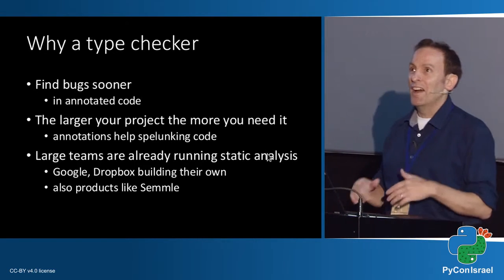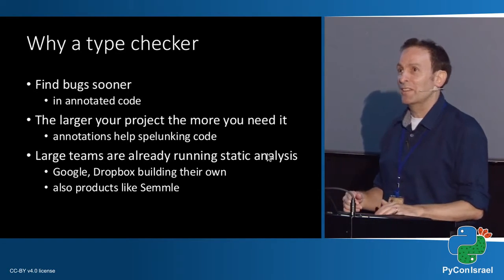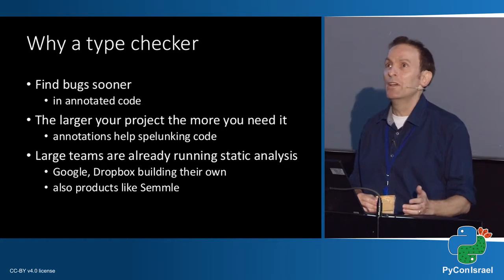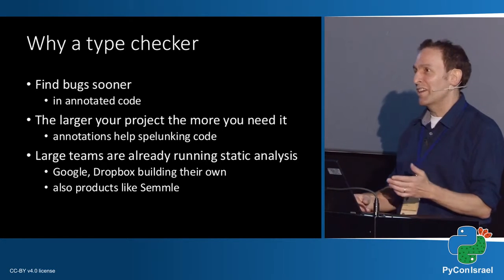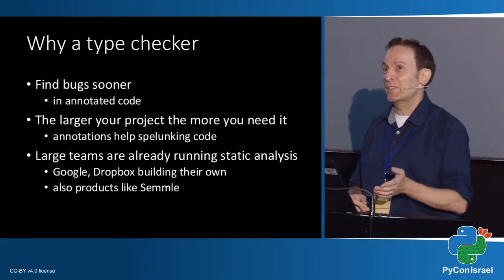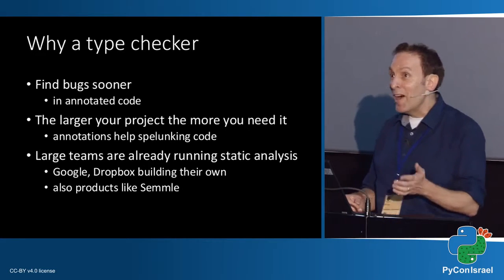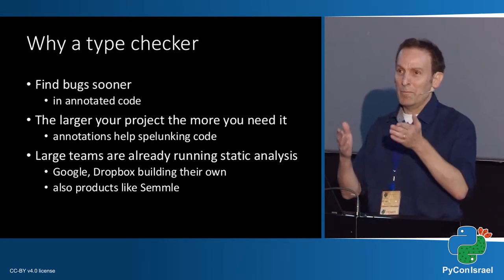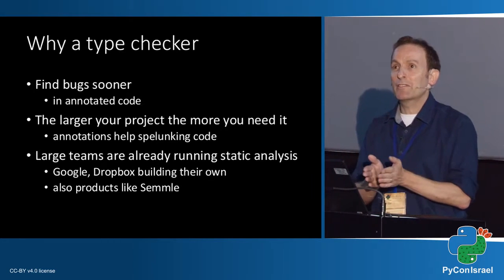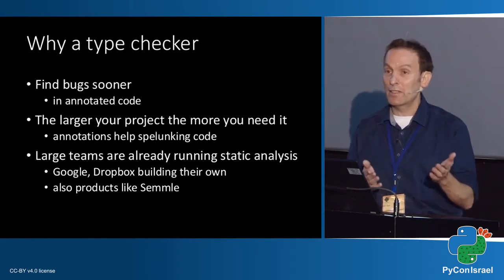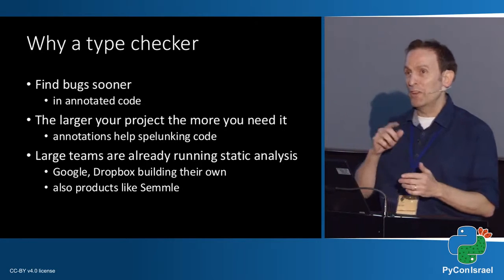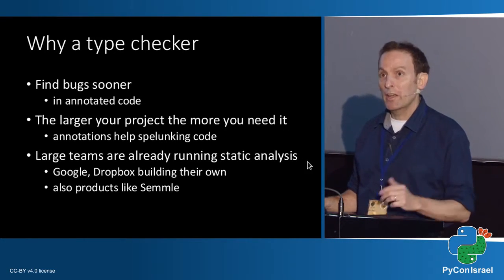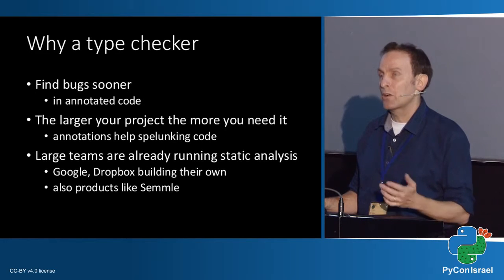PyCharm is analyzing your code, and sometimes even if you don't use type hinting at all, it can still say you use something that should have been a string. It knows by smart analysis of the code that some variable should have been a string and you put an integer instead, and it marks the error. Obviously, a type checker can help us during code writing.